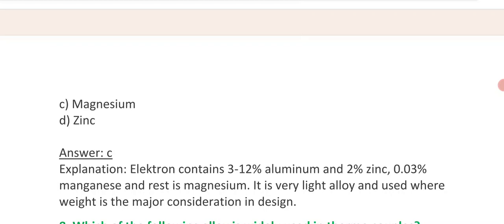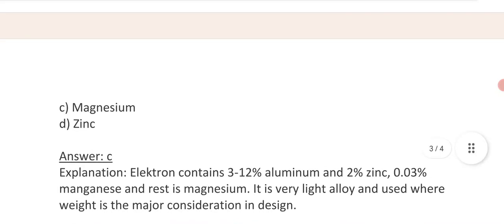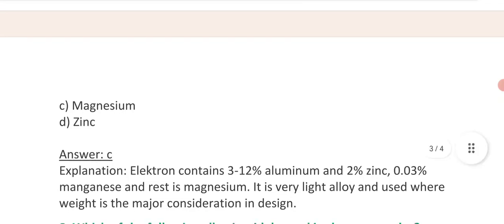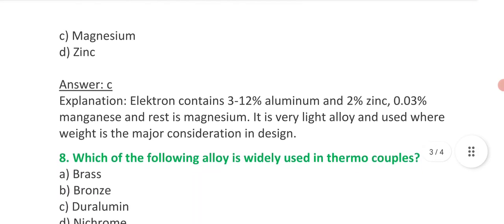Electron is very light alloy and used where the lightweight applications are considered in the design. An electron contains 3 to 12 percent aluminum, 2 percent zinc, 0.03 percent manganese and remaining is magnesium.